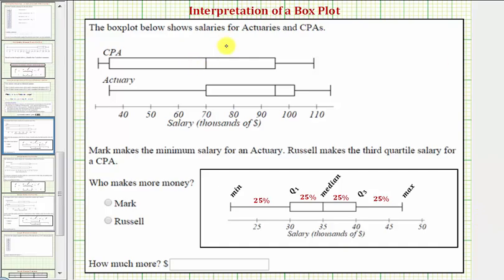The box plot shows salaries for actuaries and CPAs. This first box plot is for CPAs, the second box plot is for actuaries. Notice how the axis here is scaled by thousands of dollars.